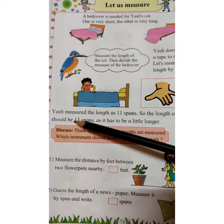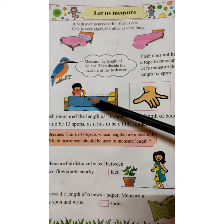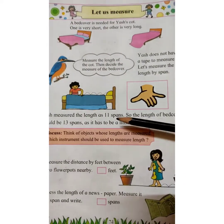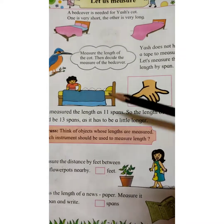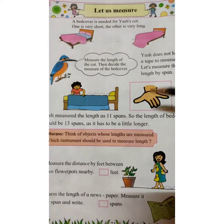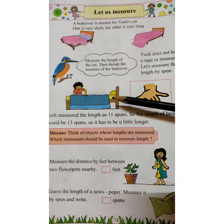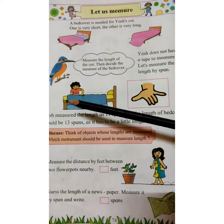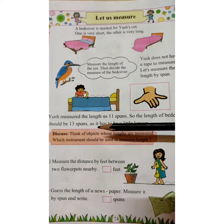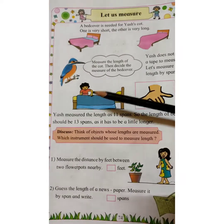So the length of the bed cover should be 13 spans. Usne pehle jab maapa, toh bed ki lambai 11 span thi — yaani 11 bita (hand spans). Toh uske liye usko kya karna padega? The length of the bed cover should be 13 spans — jo bed sheet hoga uski lambai thodi zyada hogi, yaani yahan pe 2 span zyada liya hai. As it has to be a little longer, because the bed sheet should be slightly bigger than the bed.